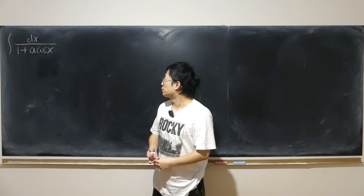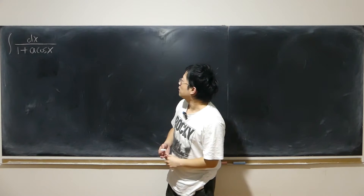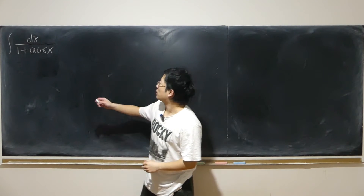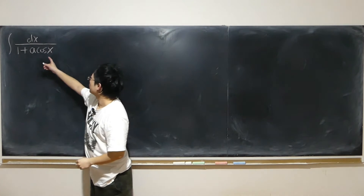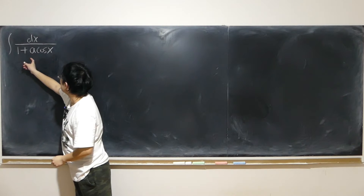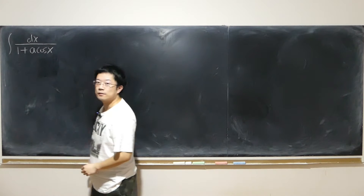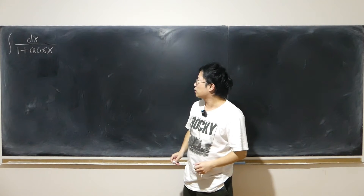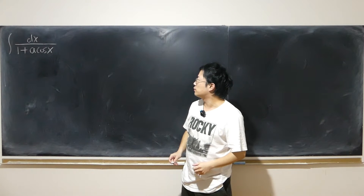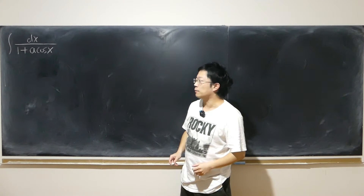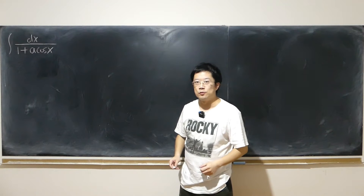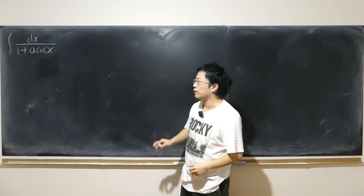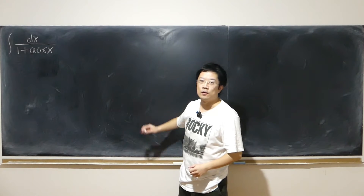We have this indefinite integral: dx over 1 plus a cosine x. I cannot think of any immediately useful trig identity.